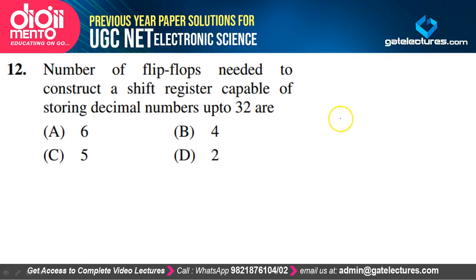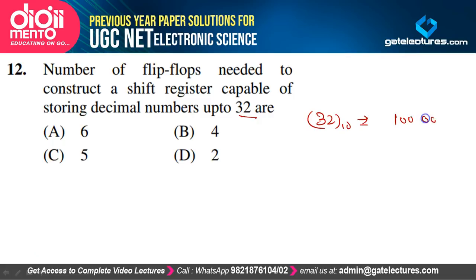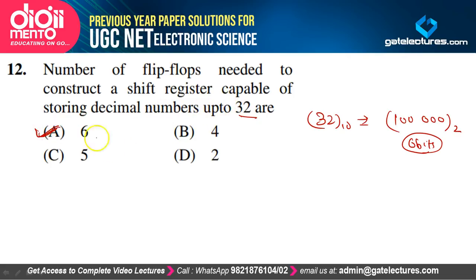Number of flip-flops needed to store decimal numbers up to 32: 32 in binary is 100000, which requires 6 bits. So 6 flip-flops are required. Option A is correct.